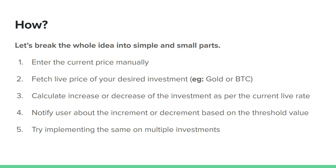So what we'll be doing first: we'll be entering the current price. If we are talking about gold, we will just Google the current price of gold and note it down. Then we will be fetching the live price of gold. Depending on the current price and the live price — where the current is the past one we entered manually, a one-time job — we'll calculate the increase or decrease. If there is a threshold, we will set a threshold, let's say 10%, 5%, or 1%. Based on that, we will notify the user that there's a 10% decrement, a 20% decrement, or a sudden decrement.